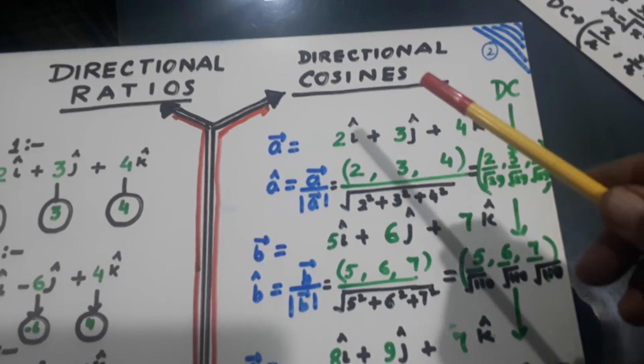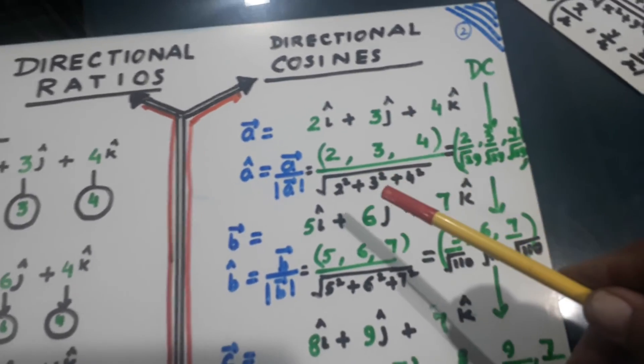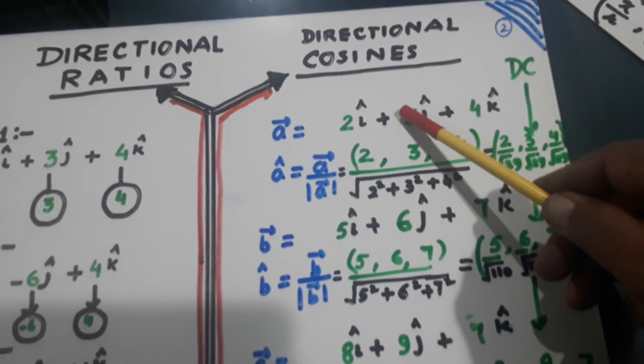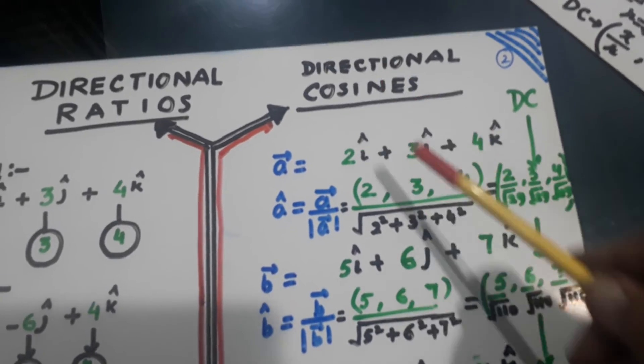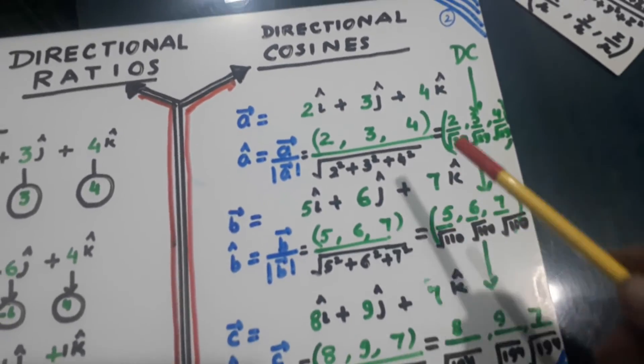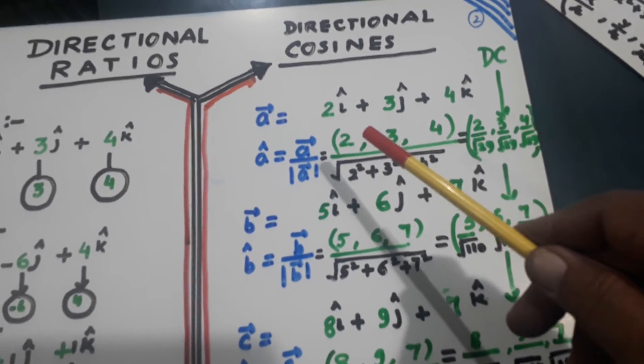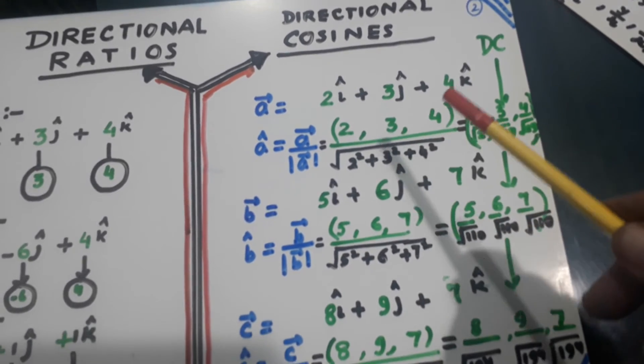Now let us go to the unit vector. And its components are directional cosines. They are called DC, directional cosine.